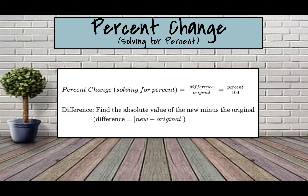To find percent change when you're solving for the percent, you set up a proportion. On the top, the numerator is where you find the difference — you subtract the two values. You'll notice these little lines here: that's absolute value, which is the distance from zero on a number line. So you take the new value minus the original value — absolute value is always positive — divided by the original, equals percent over 100. Then cross multiply like we've always been doing.